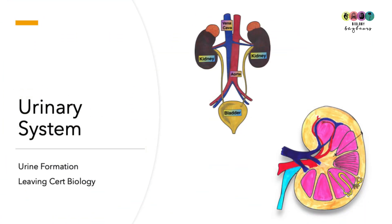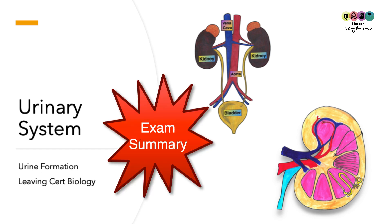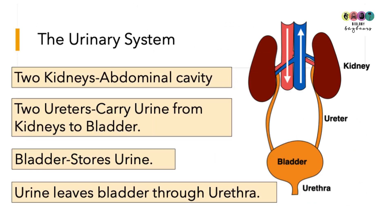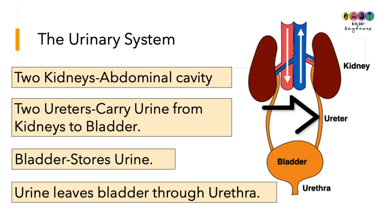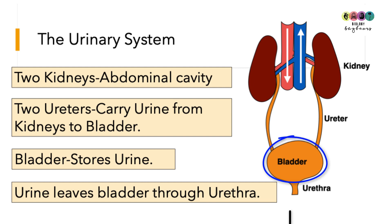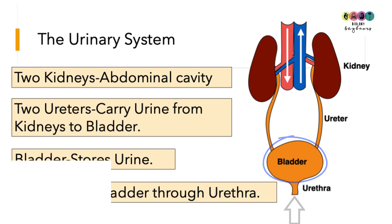This video covers the urinary system and the formation of urine, geared towards exam revision. Your urinary system is made up of your two kidneys located in the abdominal cavity. Leading from each kidney is a tube known as the ureter, which leads to the bladder — a muscular bag that stores urine. Urine is then expelled through the urethra.